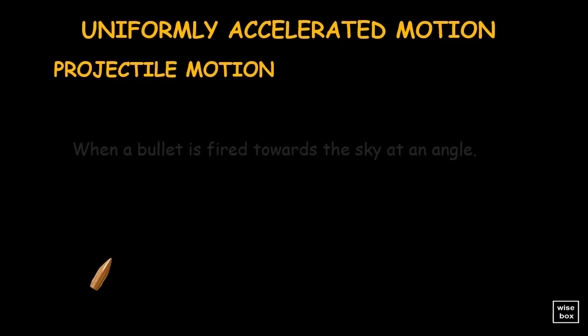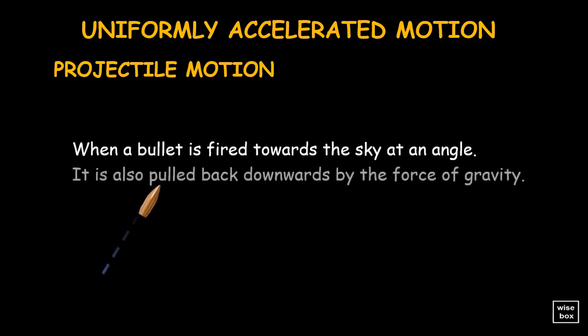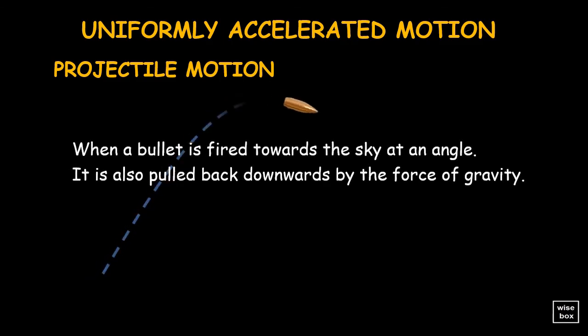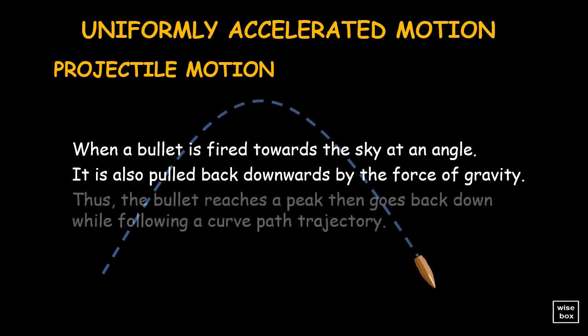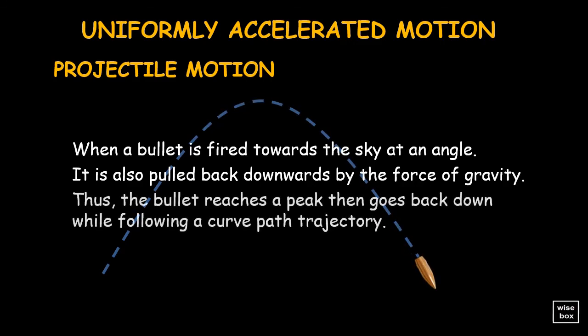When a bullet is fired towards the sky at an angle, it is also pulled back downwards by the force of gravity. In this case, the bullet reaches a peak, then goes back down while following a curved path trajectory.